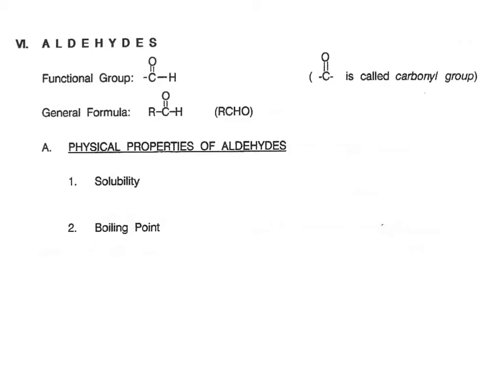Now we can look at aldehydes. For aldehydes, they have the functional group with a carbon double bonded to an oxygen and a hydrogen, and this is one of the two compounds that has something called a carbonyl group, which is a C double bond O. The general formula for an aldehyde is R-C=O-H, or when it's condensed it's RCHO.